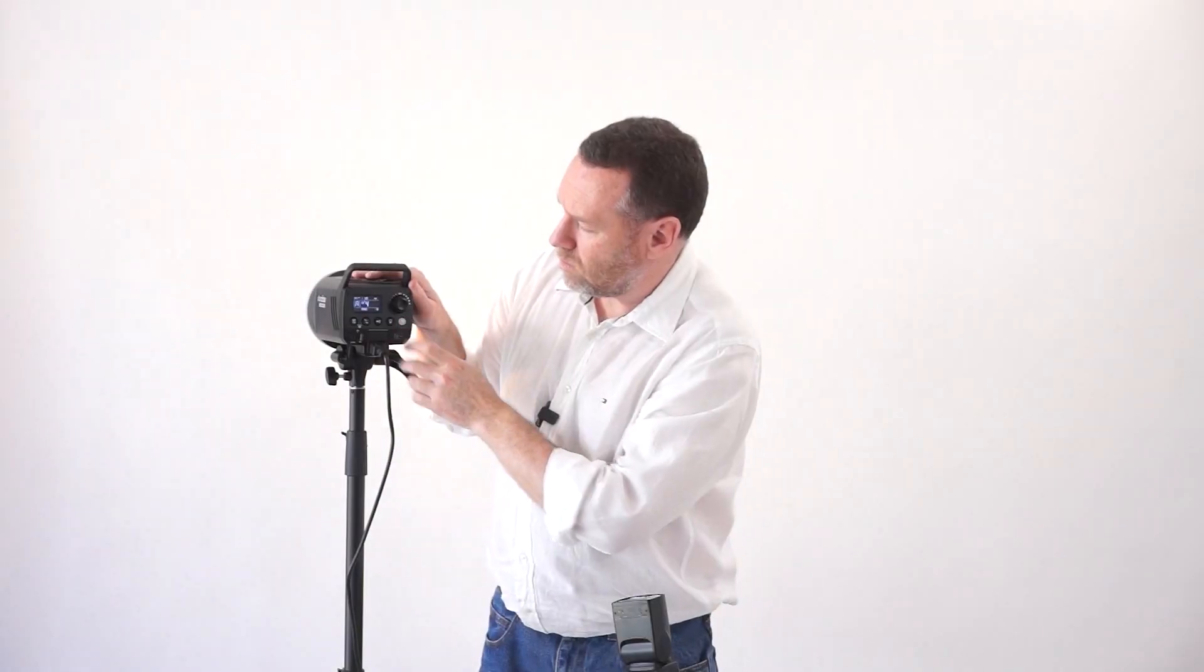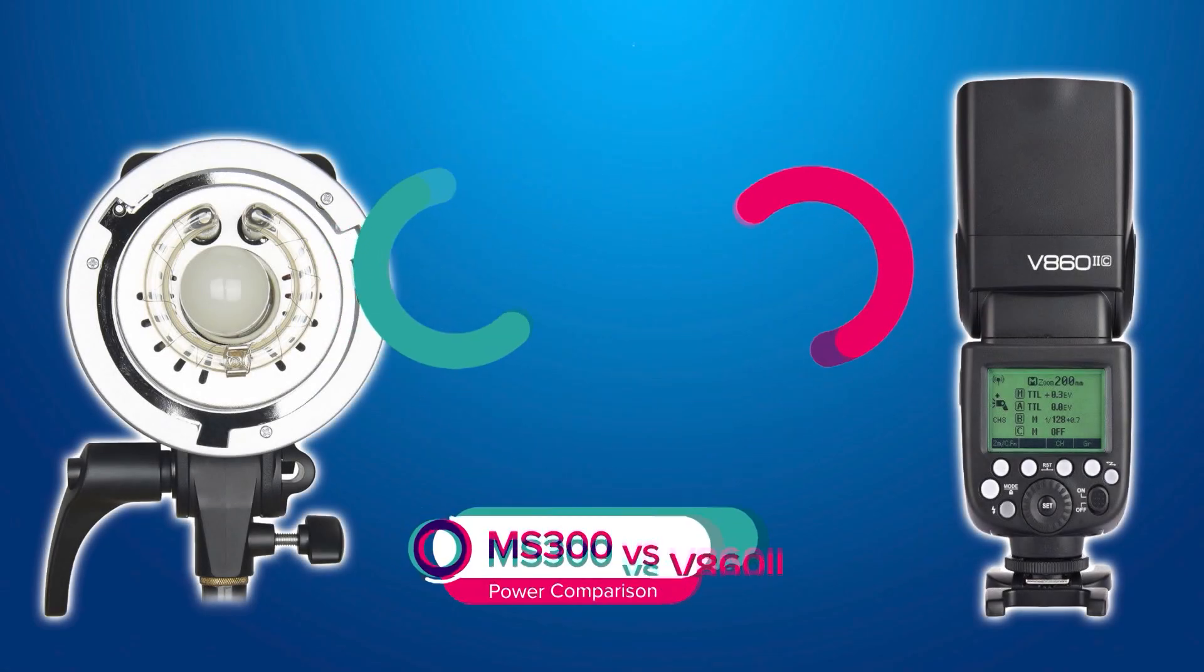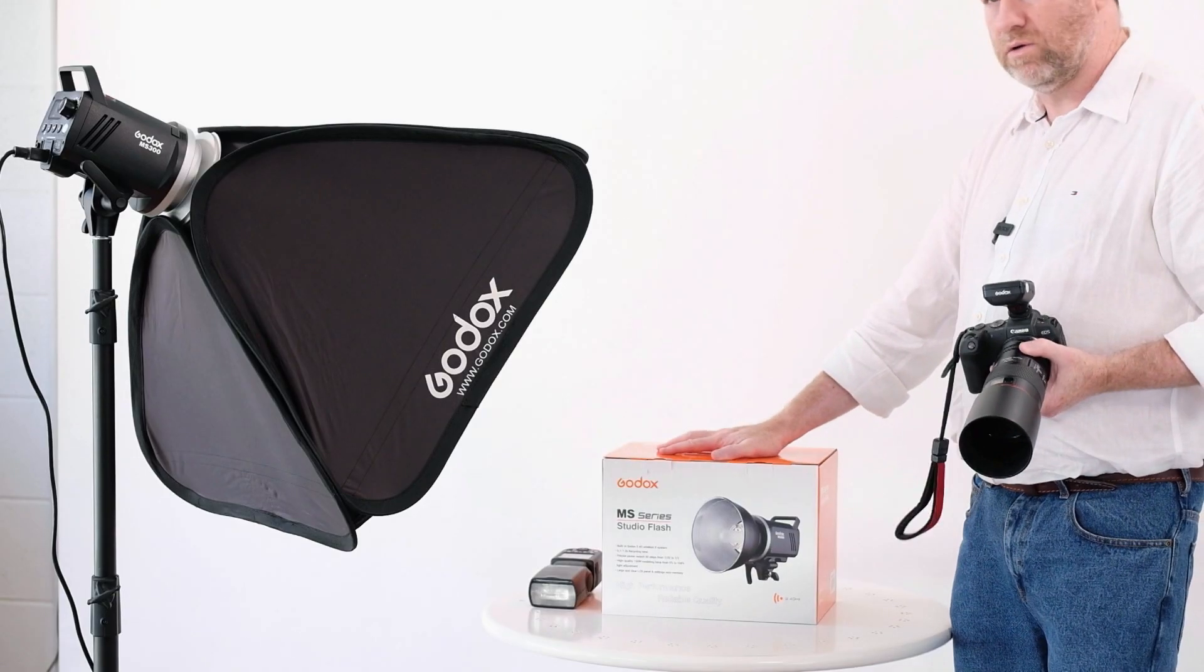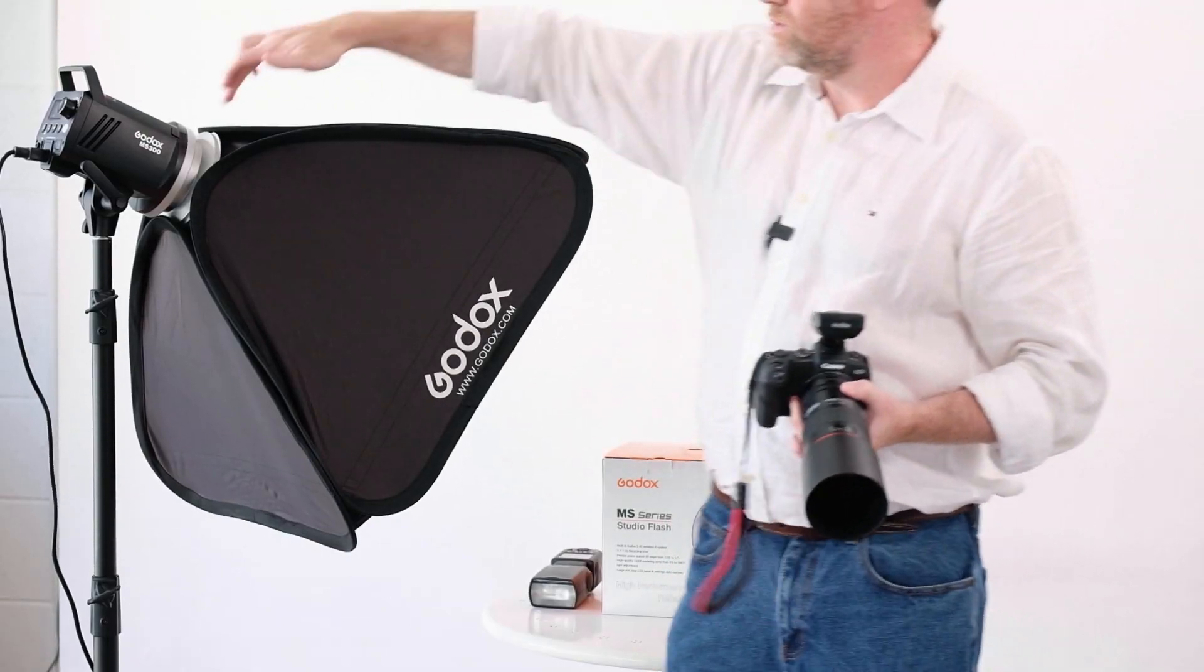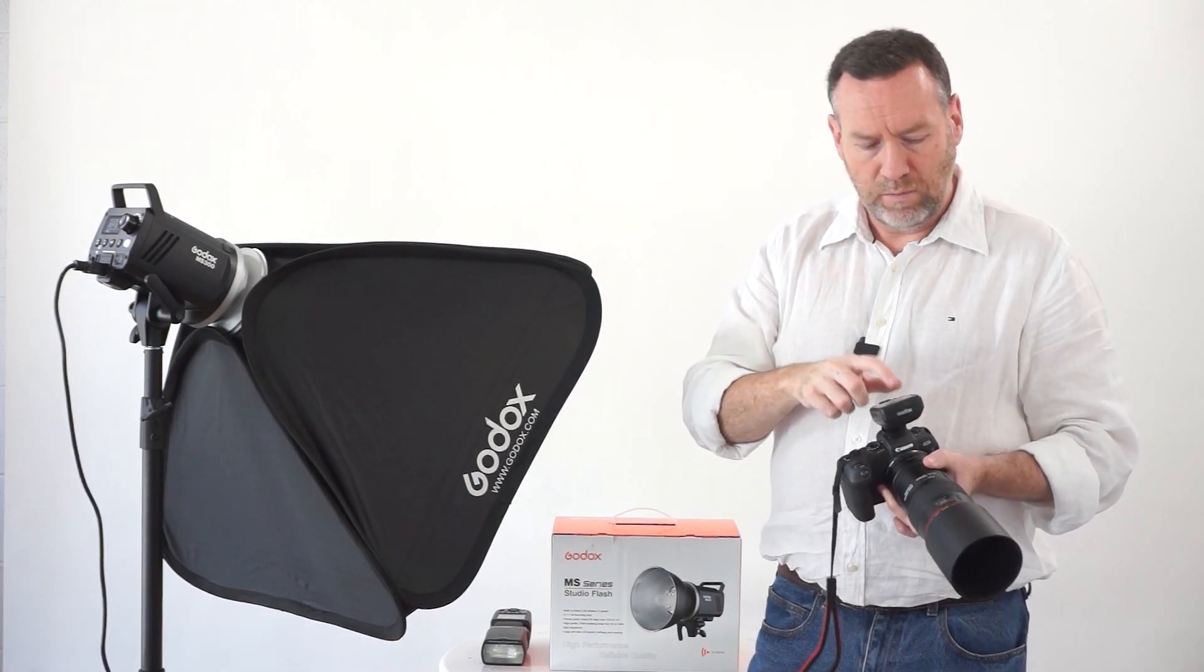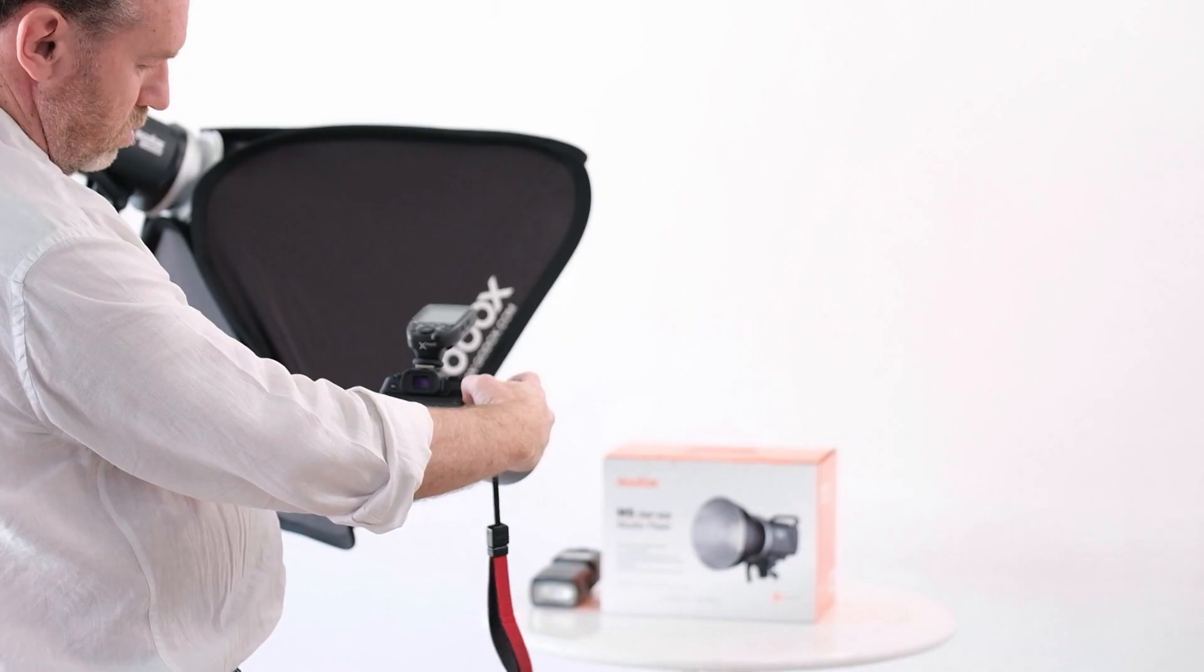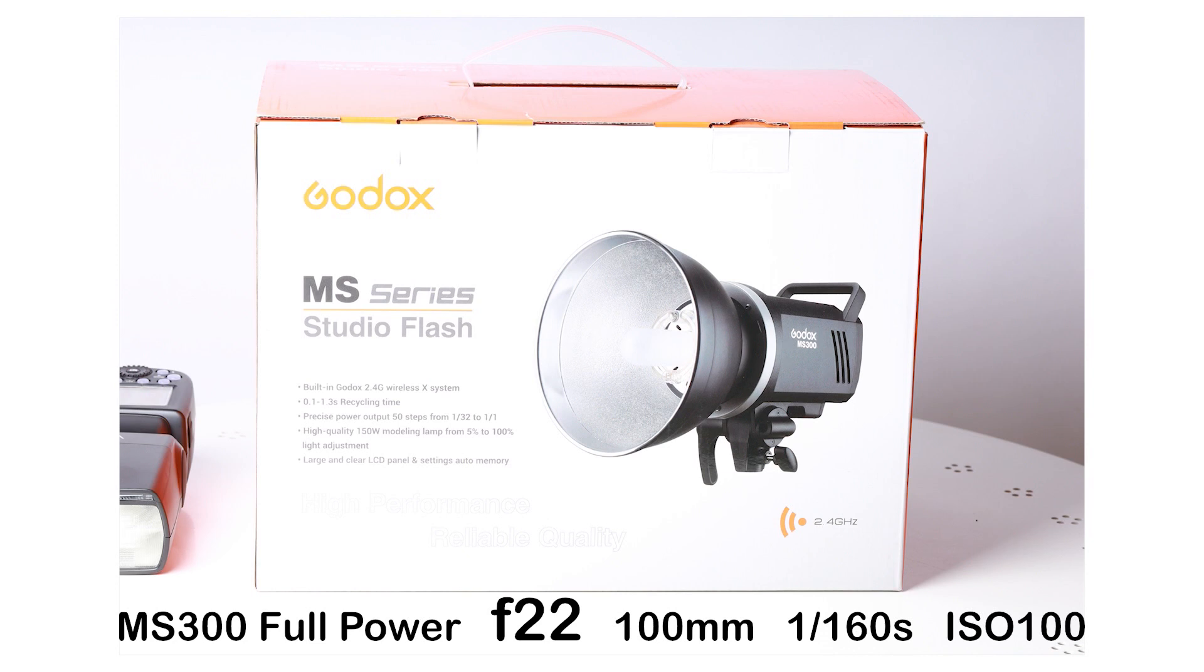What we're going to do here is do a power comparison. We're just going to photograph the empty box. We've got the MS300 here on a stand, and this time we've put a Bowens mount adapter on it and put one of the Godox collapsible soft boxes on it. I'm going to trigger it with the X-Pro trigger, but I've got this flash set to full power right now. I'm at f/22 there at ISO 100, and you can see the box is coming out okay, but it's actually overexposing a little bit on this side of the box.